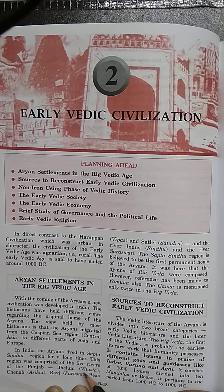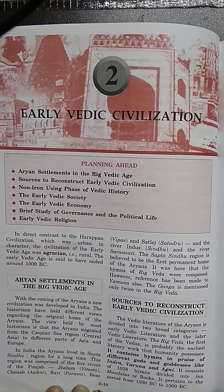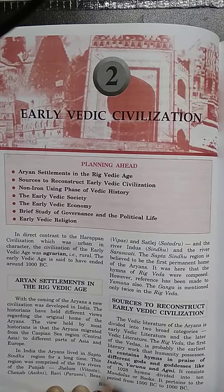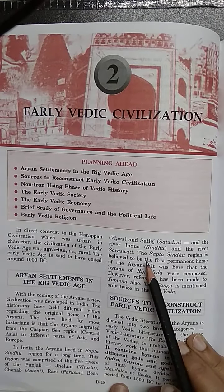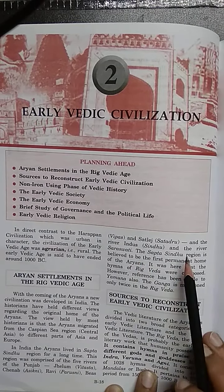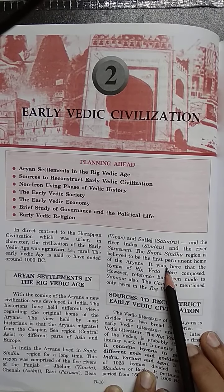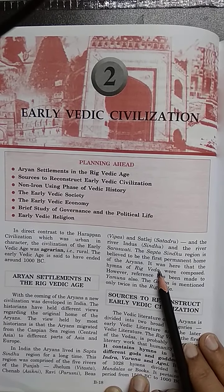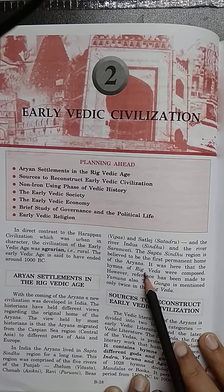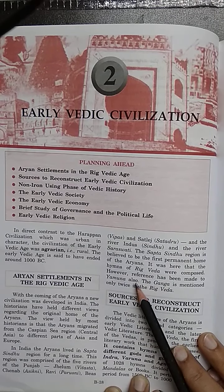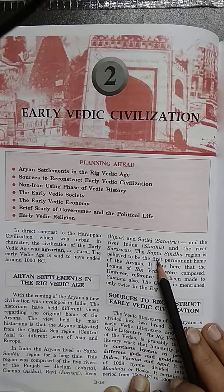This region was comprised of the five rivers of Punjab. Punjab is known as Punjab because of five rivers: Jhelum, Chenab, Ravi, Beas, and Sutlej, along with the river Indus and the river Saraswati. They first settled at this place, and this was the first permanent home of the Aryans, known as Sapt Sindhu.